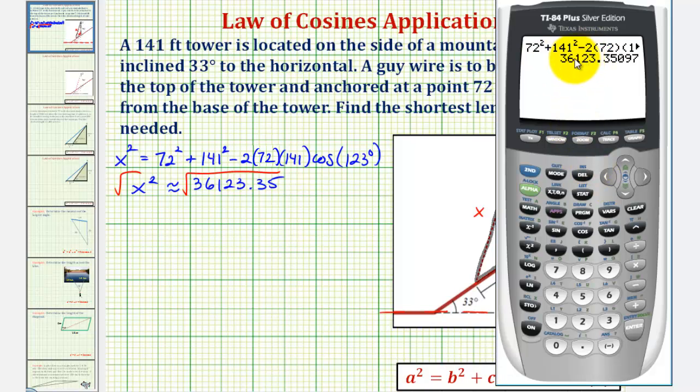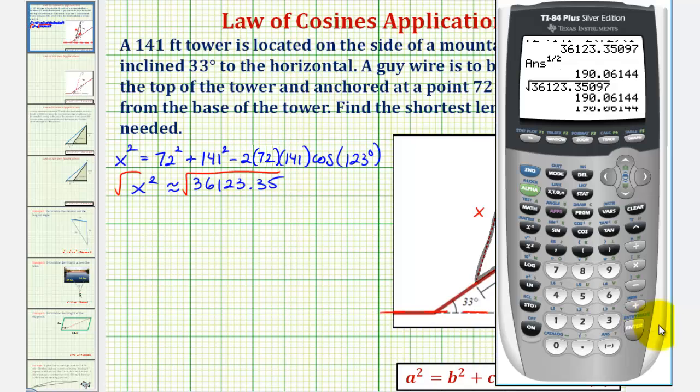Since we already have this value in here, since taking the square root is equivalent to raising it to the one-half power, we could just press the exponent key, and then enter the exponent of one-half, and then press enter. This would be the same thing as taking the square root of 36,123.35097. So the approximate length of the guy wire would be 190.06 feet.